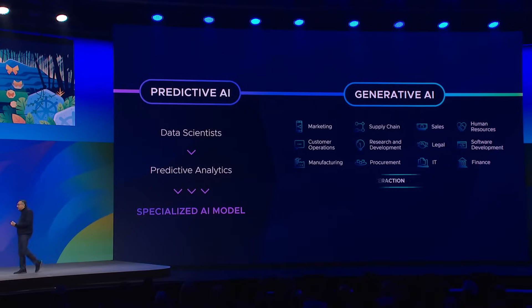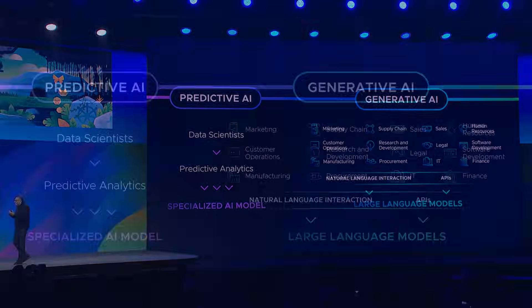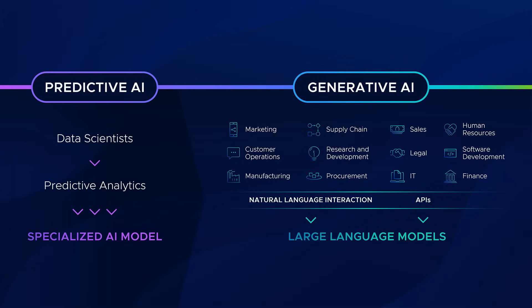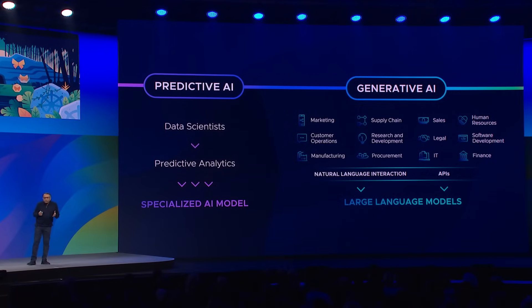But with generative AI, here's what's different. These foundation models, or large language models, have general applicability — it's not just for a specific use case. Even more important, the way you interact with it is not through a formal programming language. The way you interact with it is through natural language, which means literally everybody in your enterprise can interact with it. So the combination of this universal access and general purpose model, combined with 100x improvement in the economics of creativity, means you can think about all sorts of applications that were never possible before.